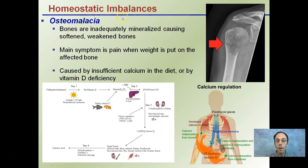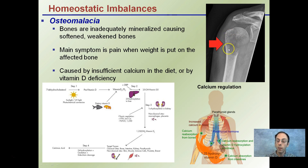So these homeostatic imbalances — osteomalacia is one of these conditions. This is where bones are inadequately mineralized, causing softened and/or weakened bones to develop, as evident in this x-ray. The main symptom is pain when weight is put on the affected bone, because of these inadequate mineralizations and small fractures that may be occurring, which can cause pain to the individual.